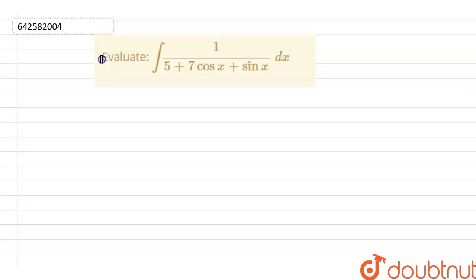The question is: evaluate the integration of 1 divided by (5 + 7cos x + sin x) dx.